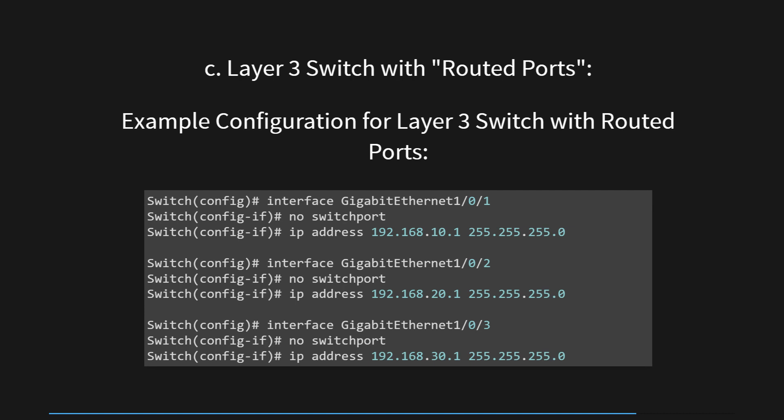Here's the explanation of each step. Step 1: 'Switch(config)# interface GigabitEthernet 1/0/1' — this command enters the configuration mode for the GigabitEthernet 1/0/1 interface. Step 2: 'Switch(config-if)# no switchport' — this command removes the interface from Layer 2 switching mode, making it a routed interface. Step 3: 'Switch(config-if)# ip address 192.168.10.1 255.255.255.0' — this command assigns IP address 192.168.10.1 to GigabitEthernet 1/0/1 with a subnet mask of 255.255.255.0. The switch's interface is now capable of routing traffic between networks.